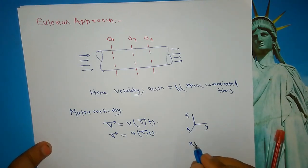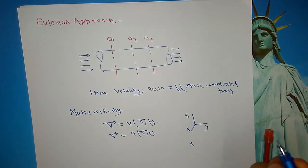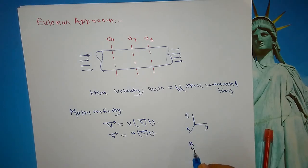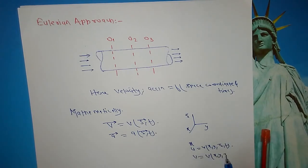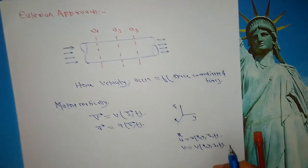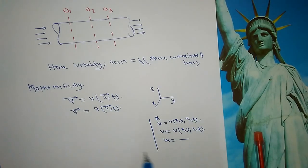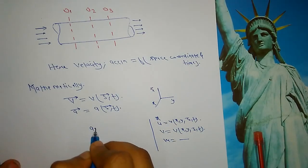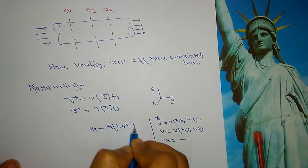In the Lagrangian case, position x is a function of initial coordinates (x₀, y₀, z₀) and time t. But in the Eulerian approach, velocity u is a function of (x, y, z, t), v is a function of (x, y, z, t) — not of the initial coordinates — and similarly w. The same applies for acceleration, which is also a function of (x, y, z, t).